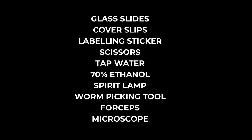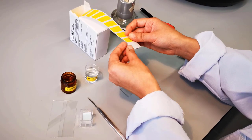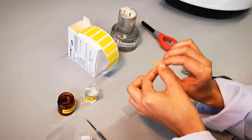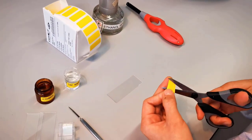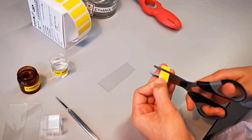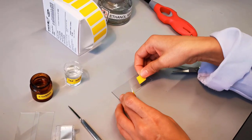These are some main requirements for this purpose. To begin with the process, one of these yellow plastic labeling stickers is cut into two parts and stuck on the center of a glass slide.